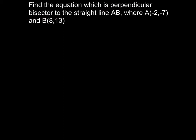Perpendicular means the line is at 90 degrees — the gradient will be 90 degrees to the straight line AB. So from here, I know M1 multiplied by M2 equals negative 1. And bisector means it divides the straight line into half. This is called the bisector.